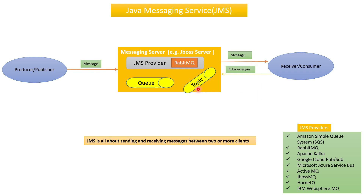JMS is essentially about sending and receiving messages. There can be multiple producers sending messages and multiple consumers receiving messages at the same time. This mechanism of sending and receiving messages is known as JMS — Java Messaging Service.